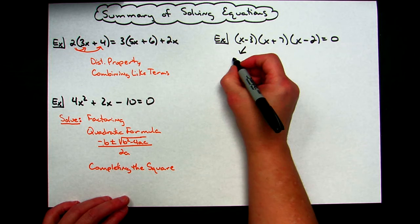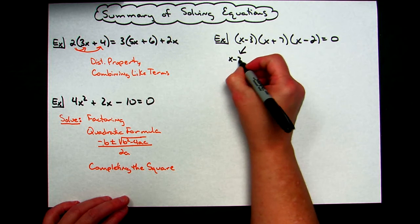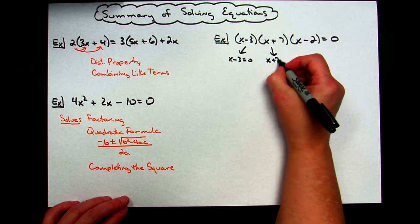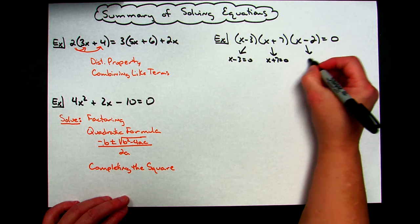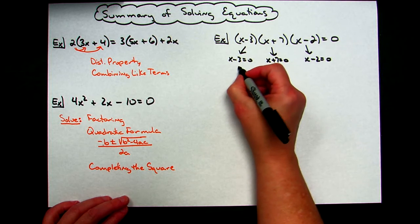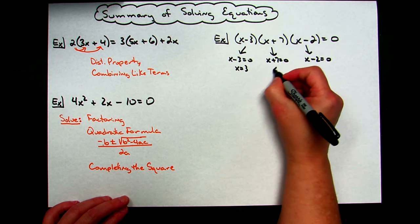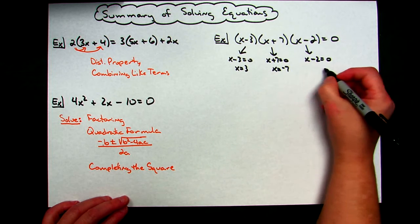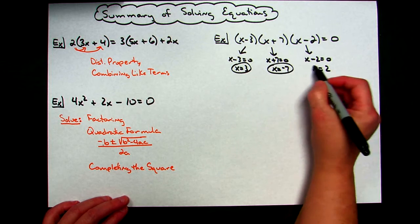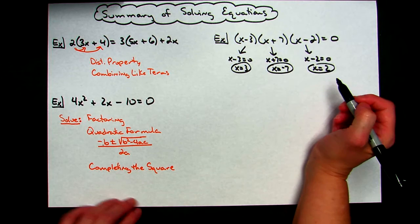We can set each of those terms equal to 0 and solve. Most of the time, as long as they're simple, you can do those really quickly in your head. X minus 2 equals 0. So then I would have an answer of x equals 3, or x equals negative 7, or x equals 2. Okay, so when an equation is in factored form, you just need to remember to set everything equal to 0.